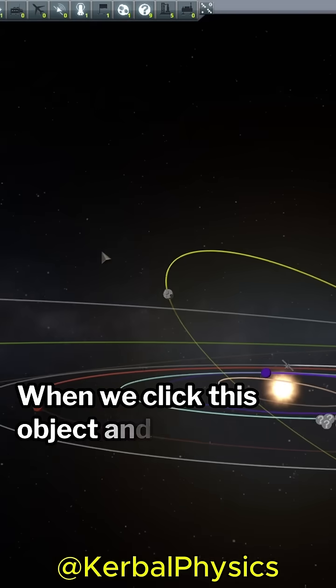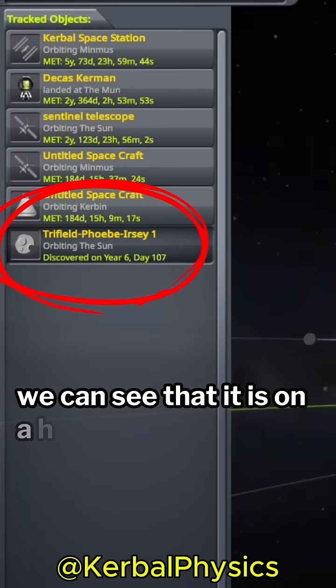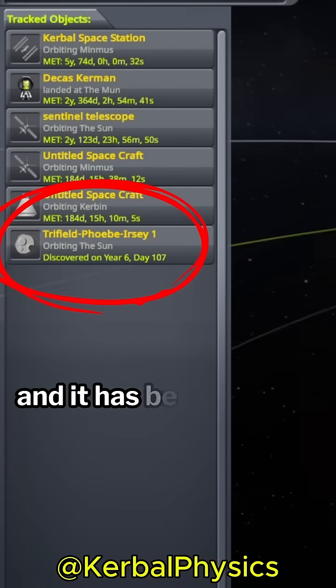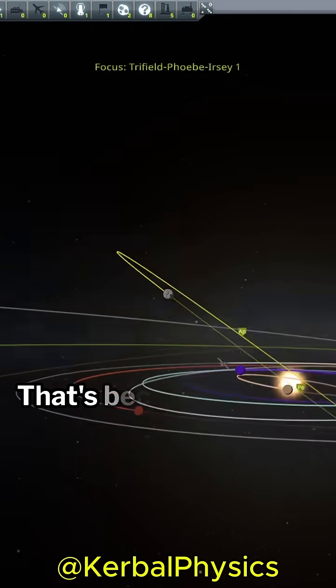When we click this object and track it, we can see that it is on a highly eccentric orbit, and it has been given a unique name. That's because this is a comet.